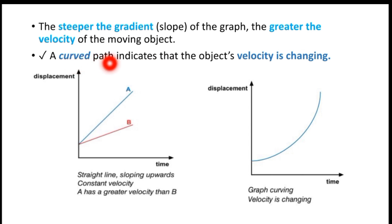A curved path indicates that the object's velocity is changing. When the path is curved or bent, this means the velocity is changing. If velocity is increasing, the gradient becomes steeper.